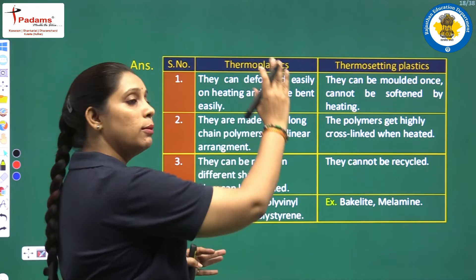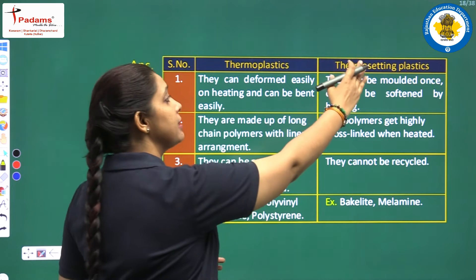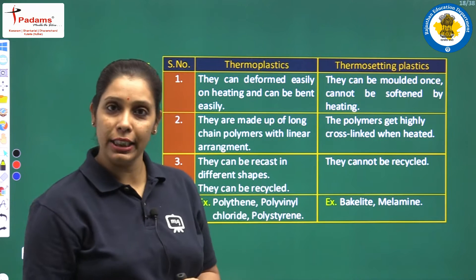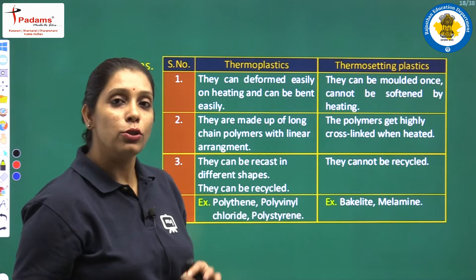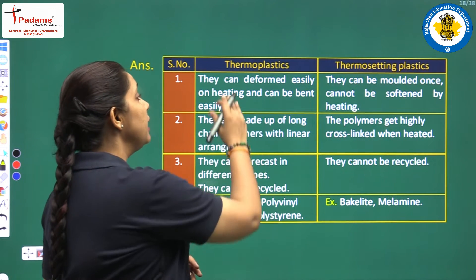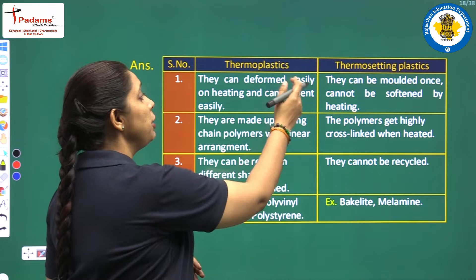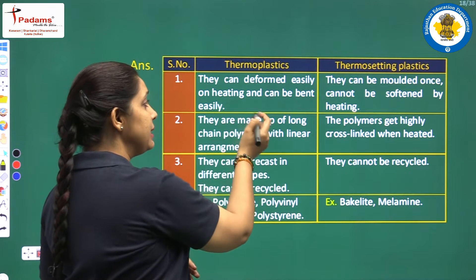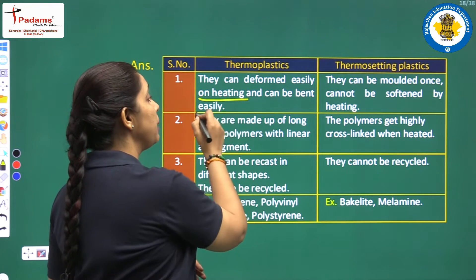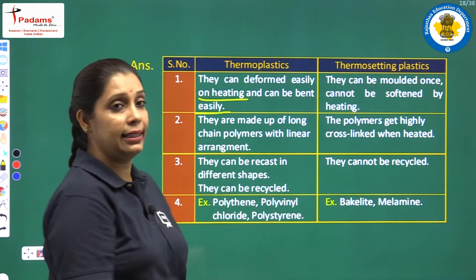First one is thermoplastic and second one is thermosetting plastic. The first major difference is that thermoplastics can be deformed easily on heating and can be bent easily.